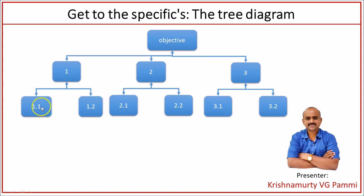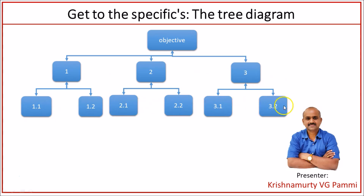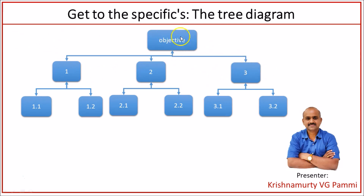At the third horizontal layer, we outline the tasks required to complete the main activities listed in the second layer. So the first layer is the goal, the second layer is main activities, and the third layer consists of the list of tasks required to complete those main activities.